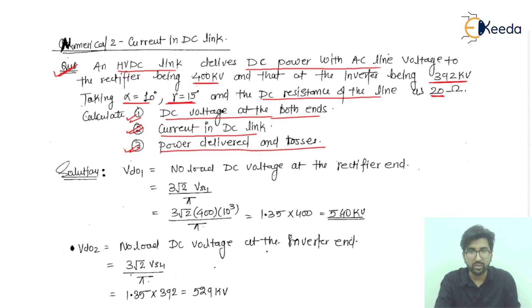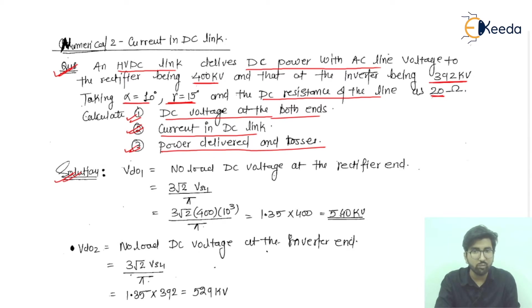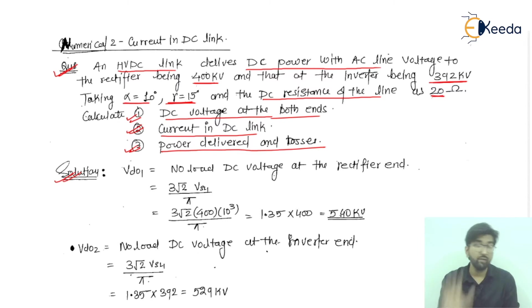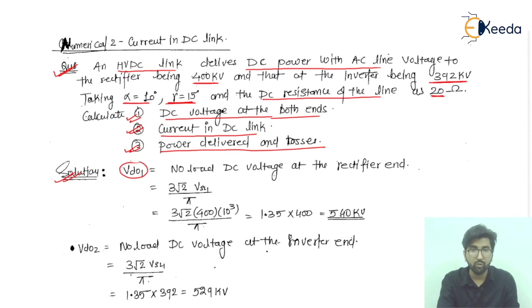Now for the solution: firstly, we find the DC voltage at both ends. I will find the DC voltage on the rectifier side. This is denoted by V_DO1, which represents the no-load DC voltage at the rectifier side.